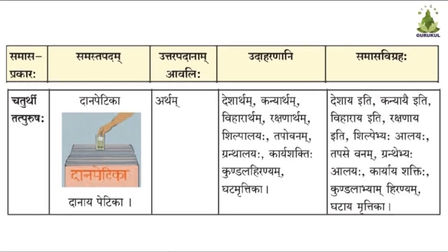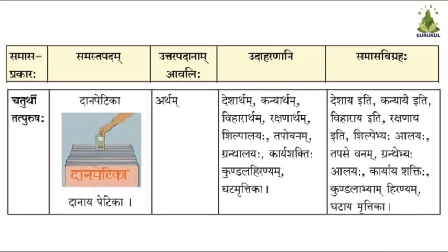Chaturthi Tatpurush Samasah: when the word Artha is the following member, the Samas is Chaturthi Tatpurush Samasah. It takes the number (Vachanam) and gender (Linga) of the noun it qualifies by Vigraha. In this Samas, a suitable form of the pronoun Idam is used instead of Artham. Sometimes Iti is also used.